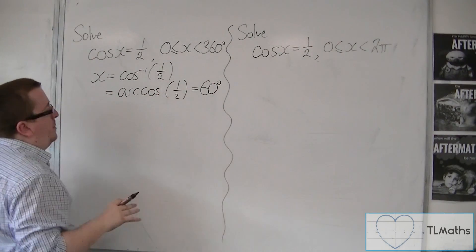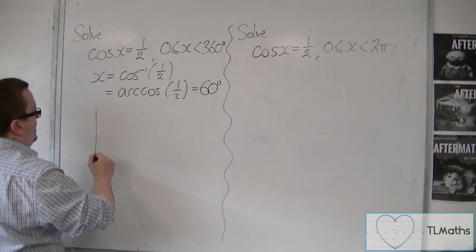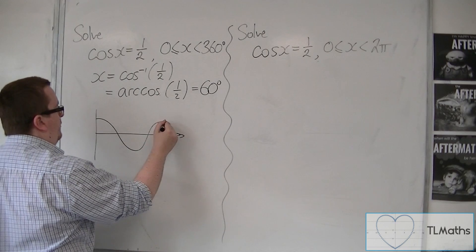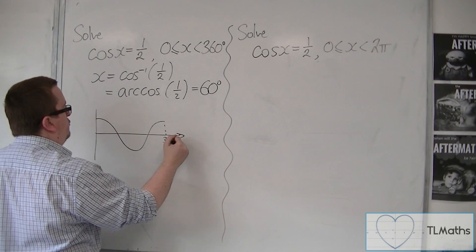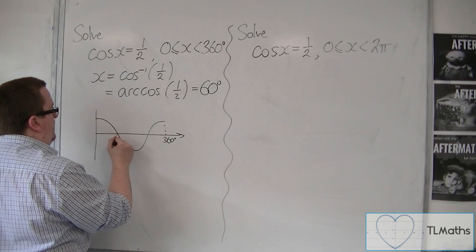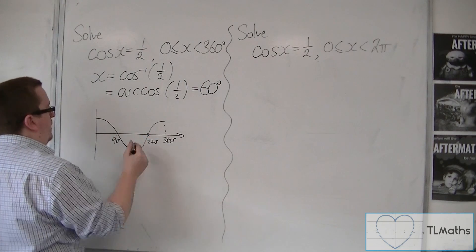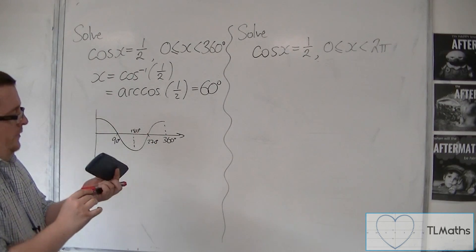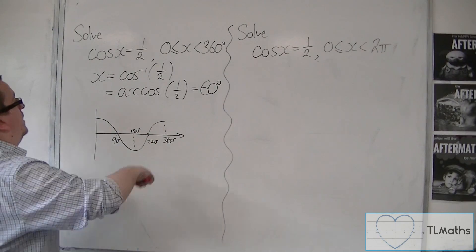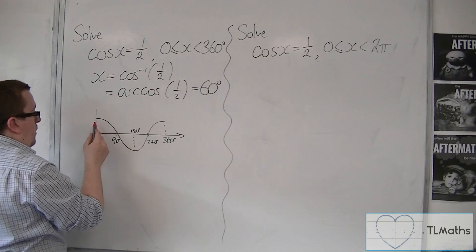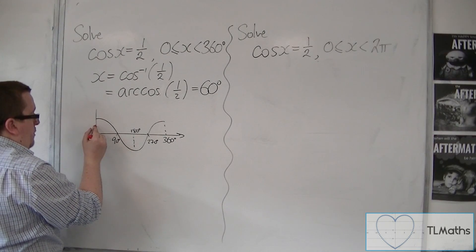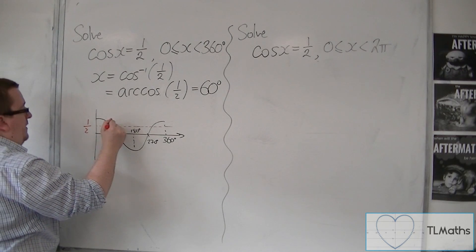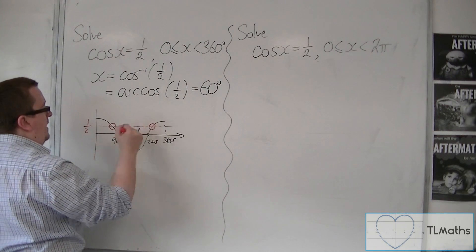That may not be the only solution, so we then sketch cosine. There's my cosine curve going between 0 and 360. So there's 90, there's 270, for example, that would be 180. Then I draw in my half line. That's at 1, that's at 0, so 1 half would be around about there. And we can see that this line crosses the curve there and there.